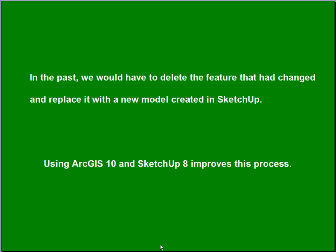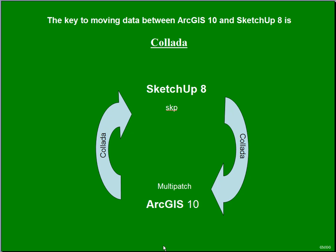In the past, we would have to delete the feature that had changed — in this case the building model would be totally erased — and it would be replaced with a new model created in SketchUp. Using ArcGIS 10 and SketchUp 8 improves this process quite a bit. The key to moving between the two environments is the Collada data exchange format, which both Google and Esri now support. We're going to use it multiple times in this process.